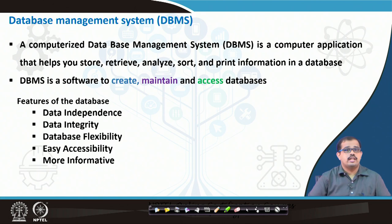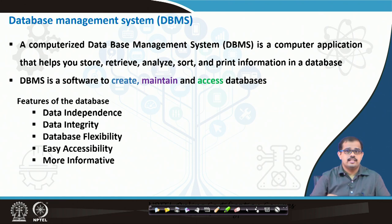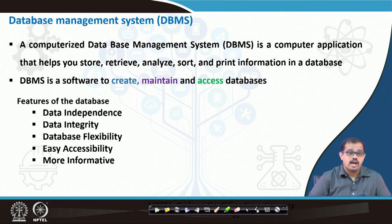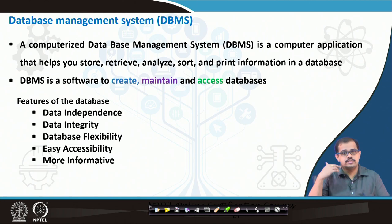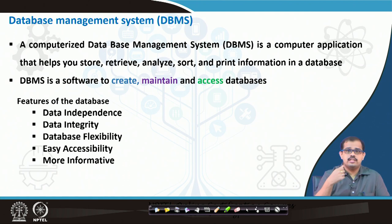When looking at features of databases, the very important feature is data independence — most data stored is independent in terms of how it is stored. Then data integrity — the integrity of any data is essential in maintaining the entire database. Data integrity is a very important feature. Then you have flexibility, and easy accessibility — once connected through your 4G network you have easy access to whatever information you need, up to your access level.